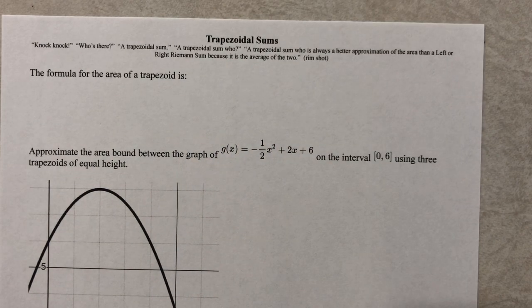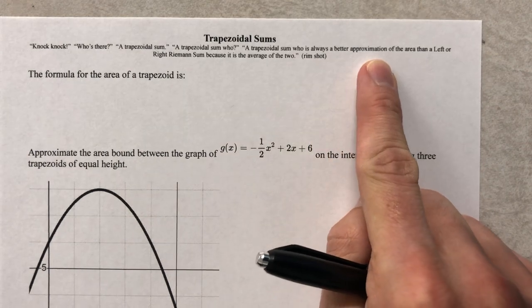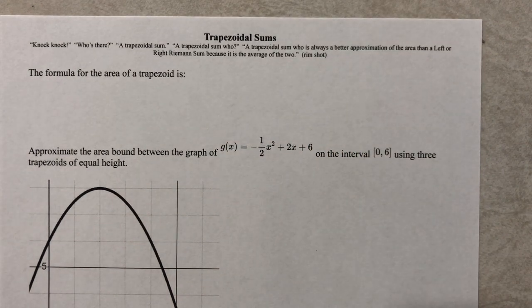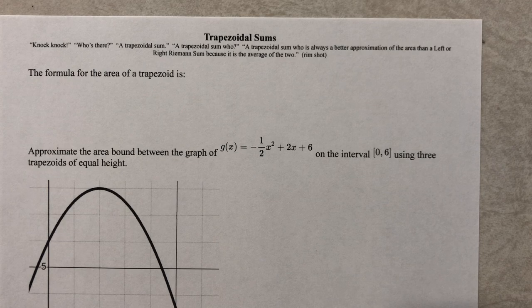Okay, so you could average your left and right-hand sum and get the trapezoidal sum, or you could just find a trapezoidal sum, but it is a better approximation. So why don't we always use it? I don't know. Good question.